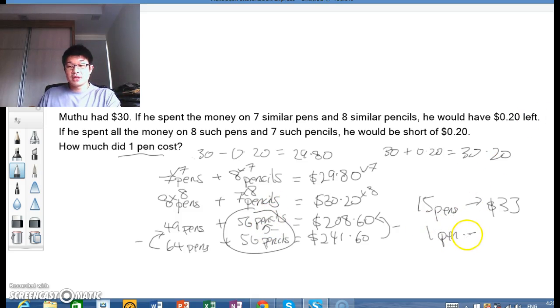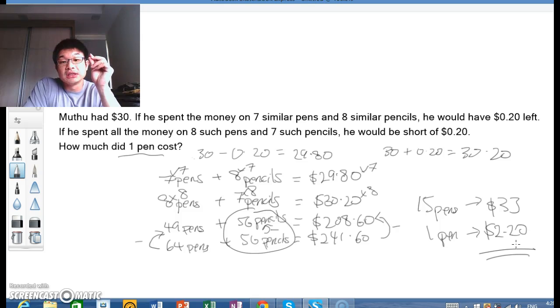So one pen would therefore be $2.20. And there you have it. Algebra done at primary school using the algebraic method, but without the presentation and the complexity of the presentation of algebraic questions.